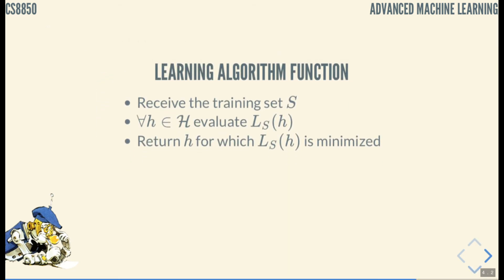So we're receiving a training set S and because our hypothesis class H is finite we can brute force, simply go over all possible hypothesis in the hypothesis set, evaluate empirical loss and return an H for which empirical loss is minimized. In principle.